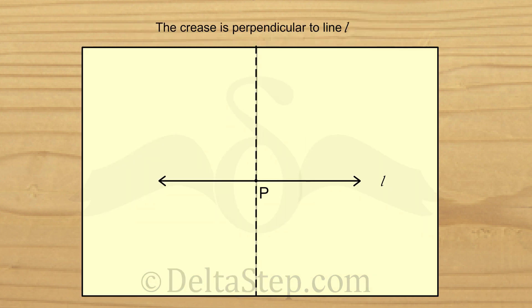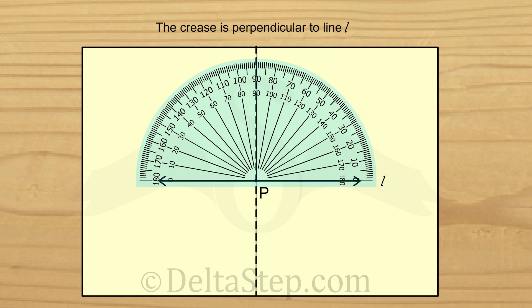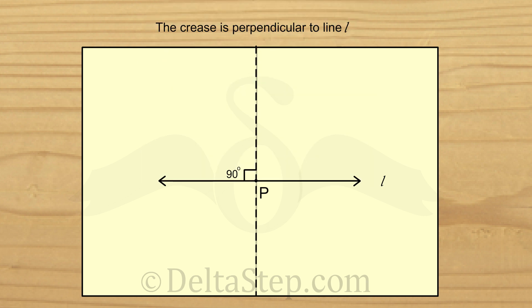Now, we open the paper and the crease formed is perpendicular to line L. How would you check if it is perpendicular? Once again, we check with a protractor and we see that the crease coincides with the 90 degree angle. So, this is how we can construct the perpendicular to a line through a point on it using a ruler and a compass and also using the trick which we learnt.